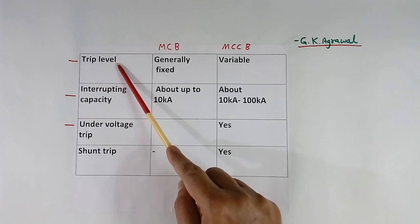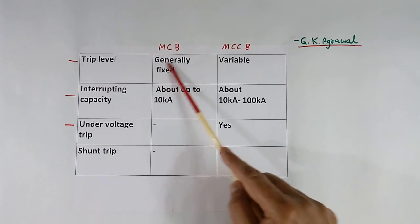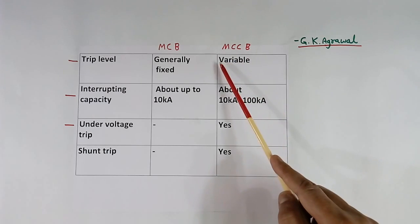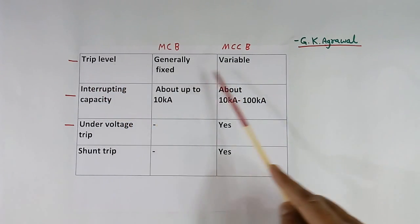Trip level. In case of MCB, trip level is generally fixed. But in case of MCCB, it is variable. We can adjust the trip level to what we want.